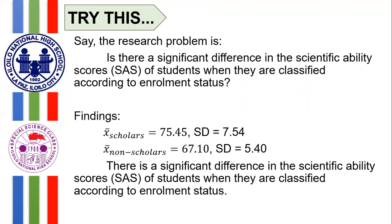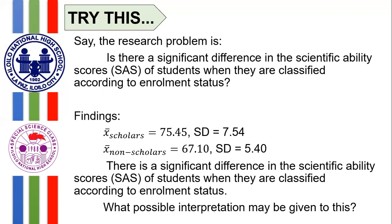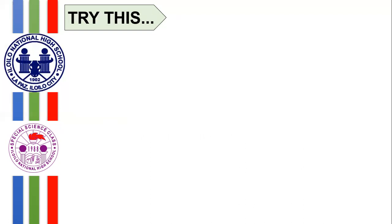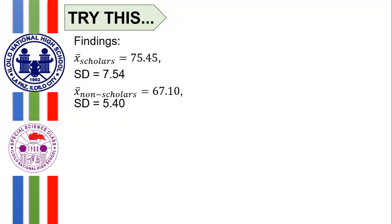Remember, if there is a significant difference in the means, this implies that one mean could be greater than the other, or the first mean could be less than the other. In mathematics, if A is not equal to B, then either A is greater than B or A is less than B. So if there is a significant difference, you have to tell whether one is larger than the second or smaller than the second. We examine their means: the mean of scholars is 75.45, while that of non-scholars is 67.10.